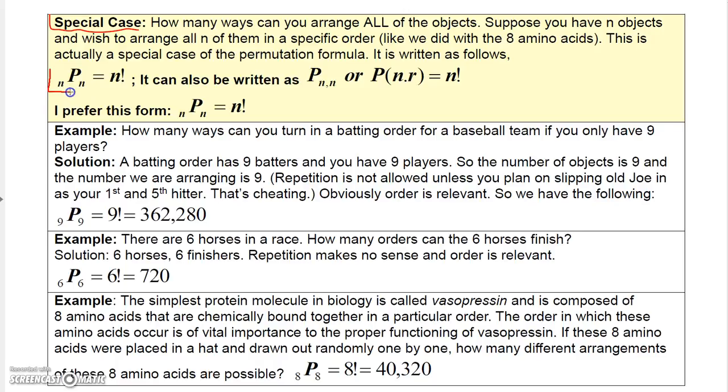It's nPn. In other words, you have n total objects, and you want to arrange n of the objects. And nPn is always n factorial. Permutations can be written in different ways, like I could also write it like this, or write it like this, but I prefer this form down here.